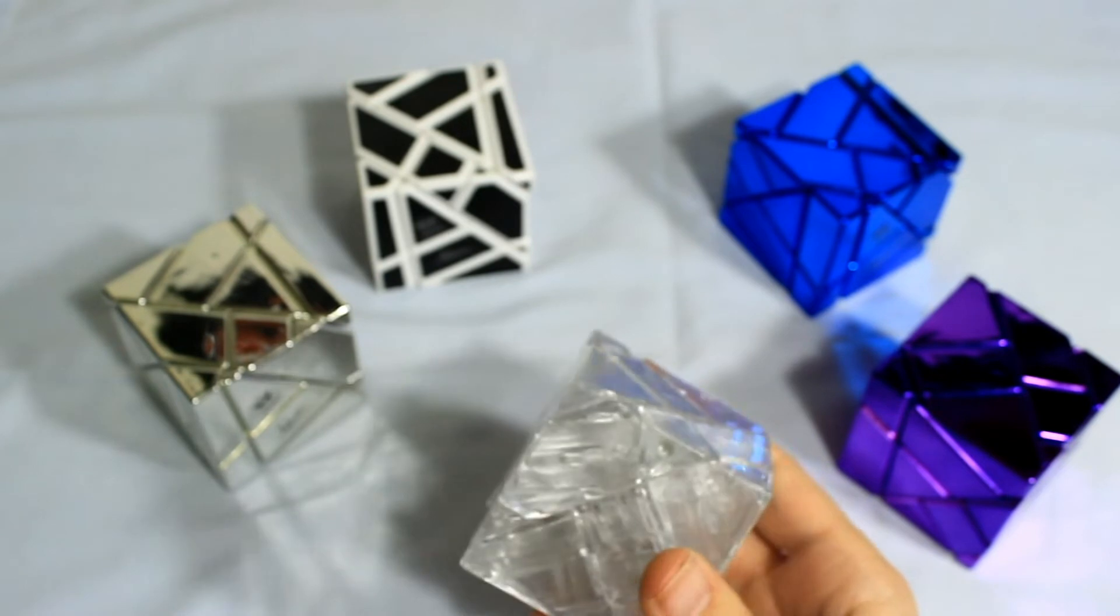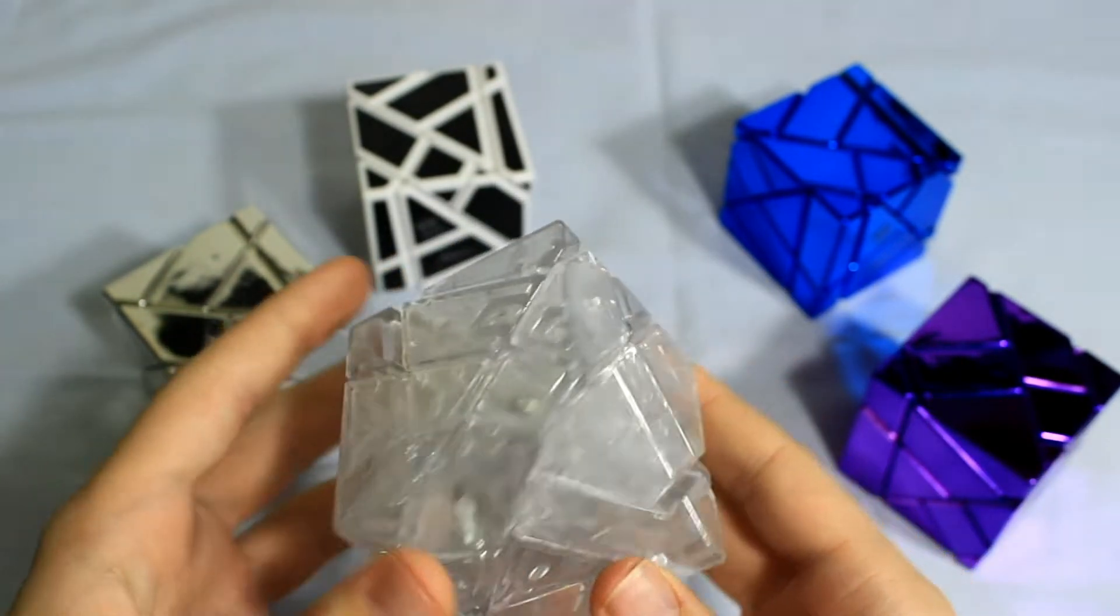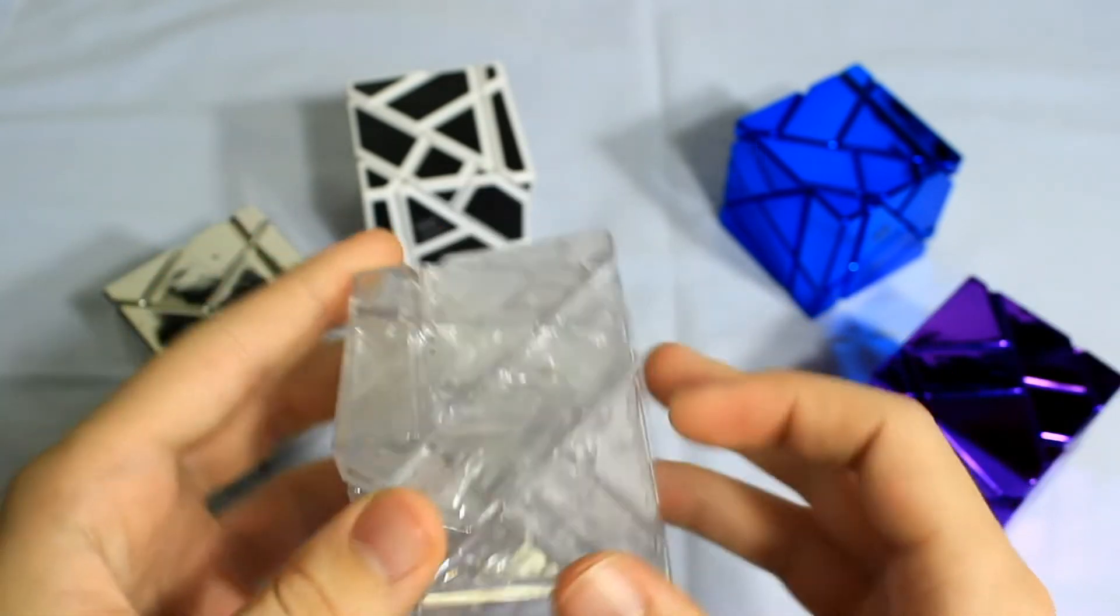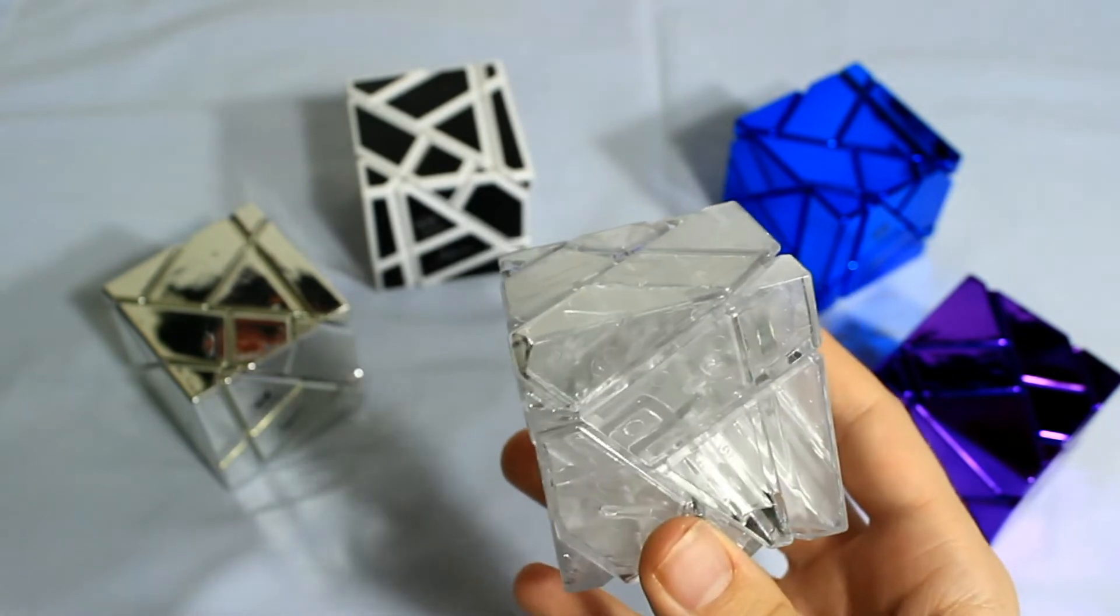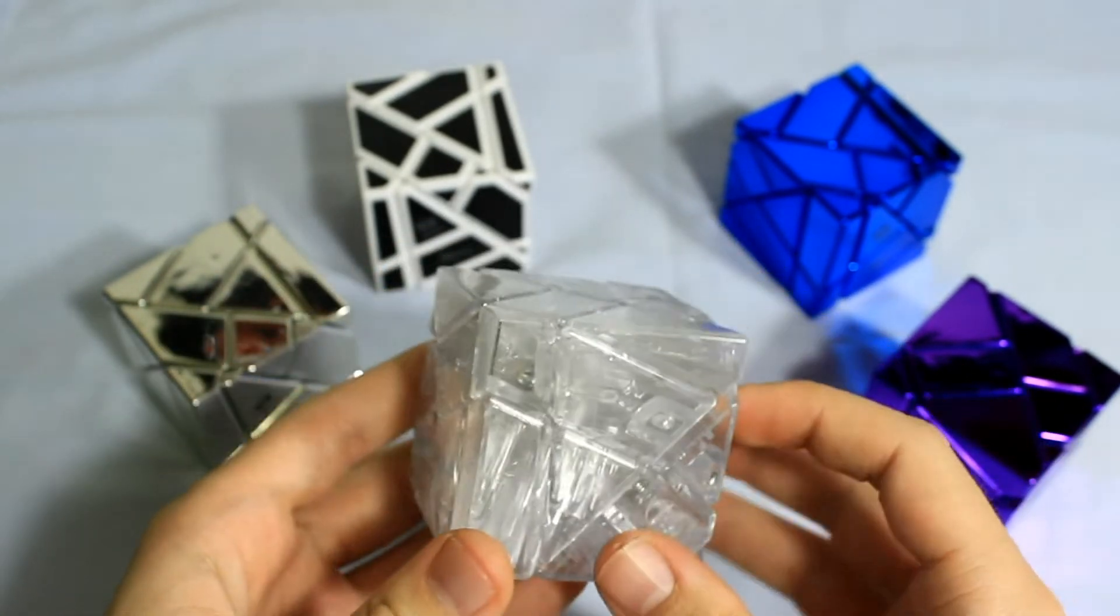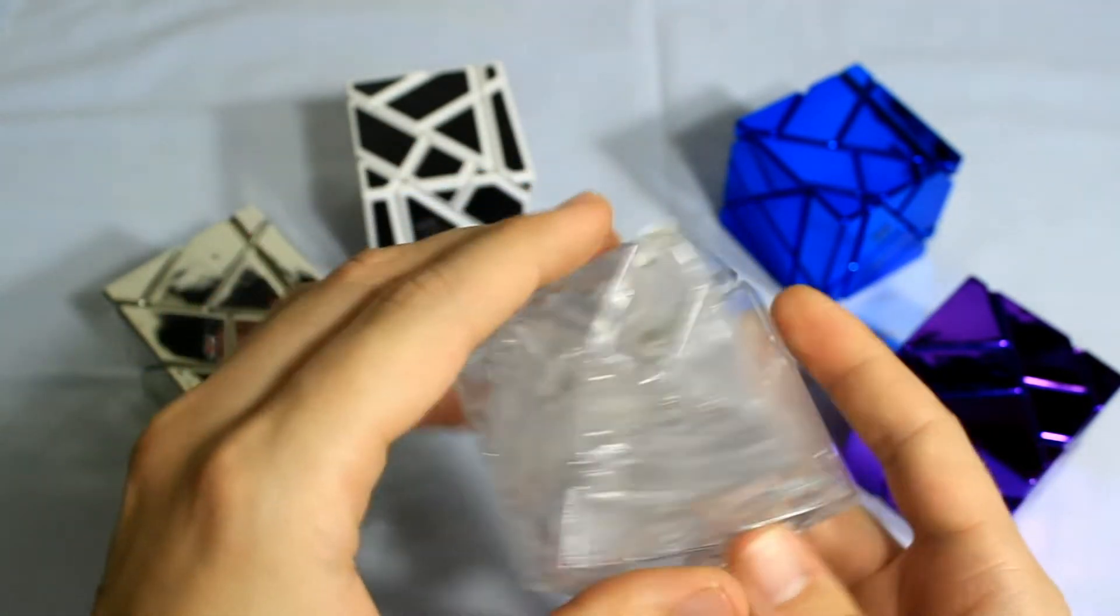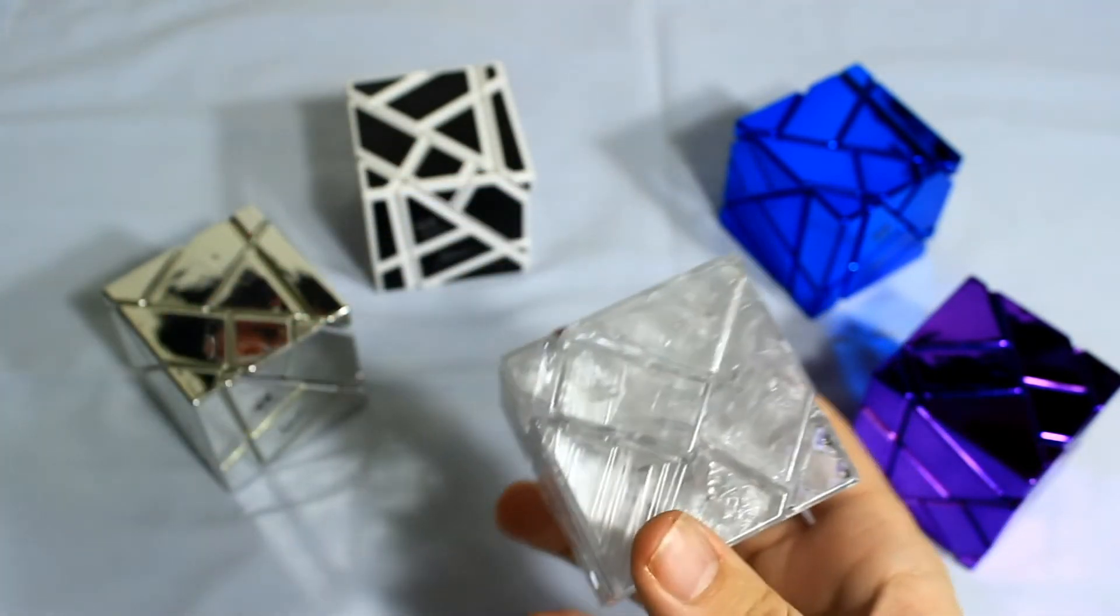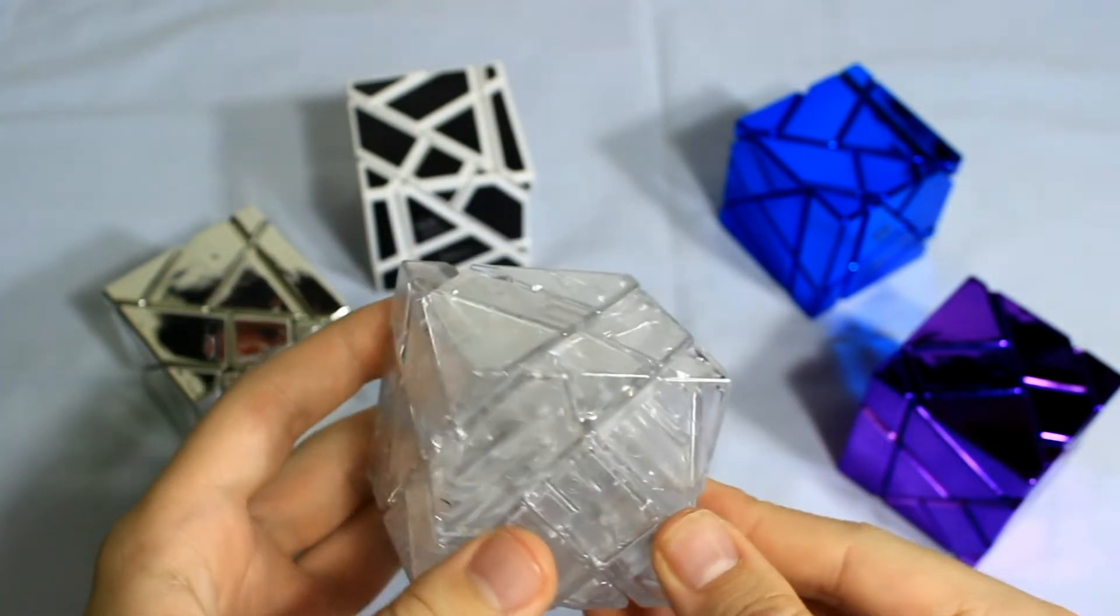And they also have a crystal pyraminx that they're releasing in the same transparent plastic, as well as a transparent hollow 2x2 and 3x3, I believe. And then also a transparent void skewb ultimate. I think that one particularly looks really cool. Not quite as cool as the ghost cube because the shapes just aren't quite as crazy. But any one of those, they're in celebration for the 50th anniversary of the pyraminx.